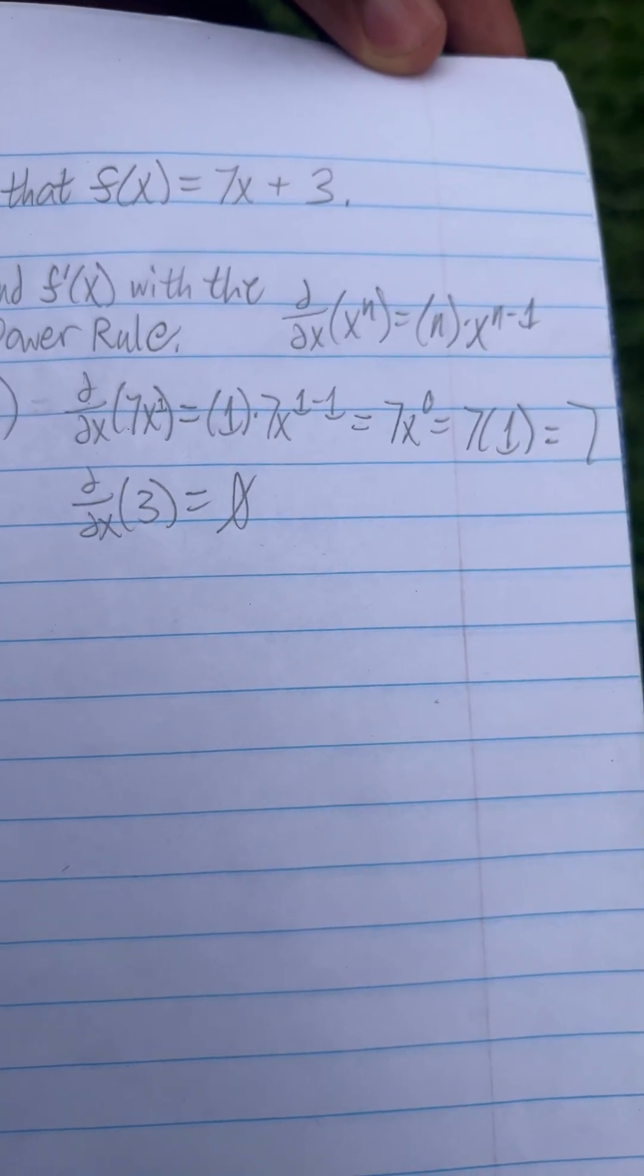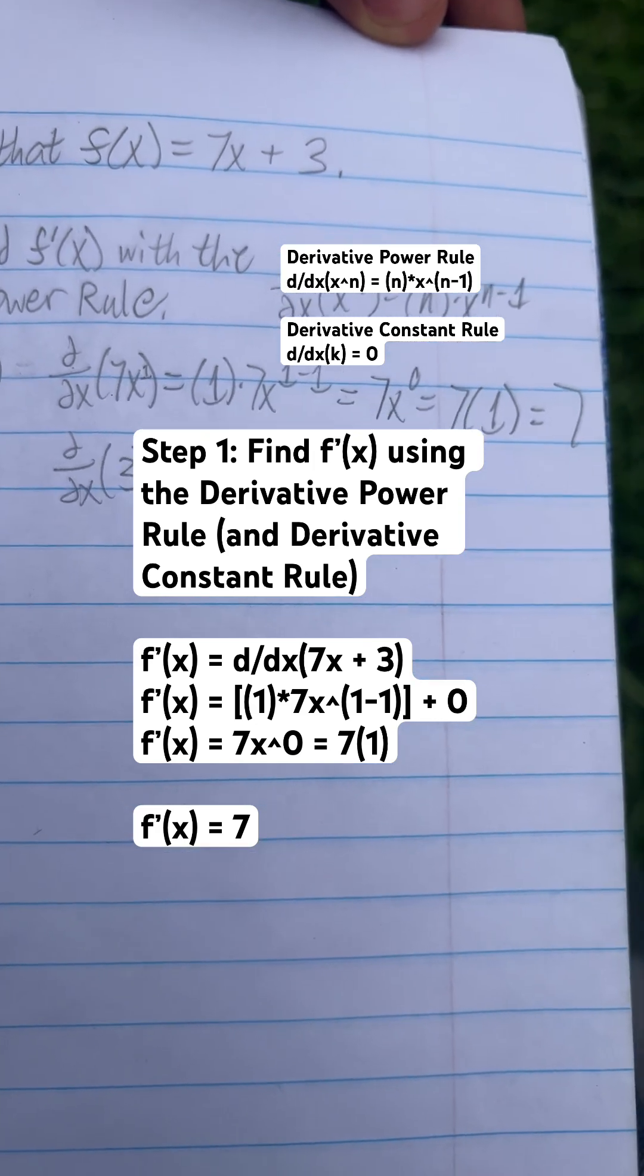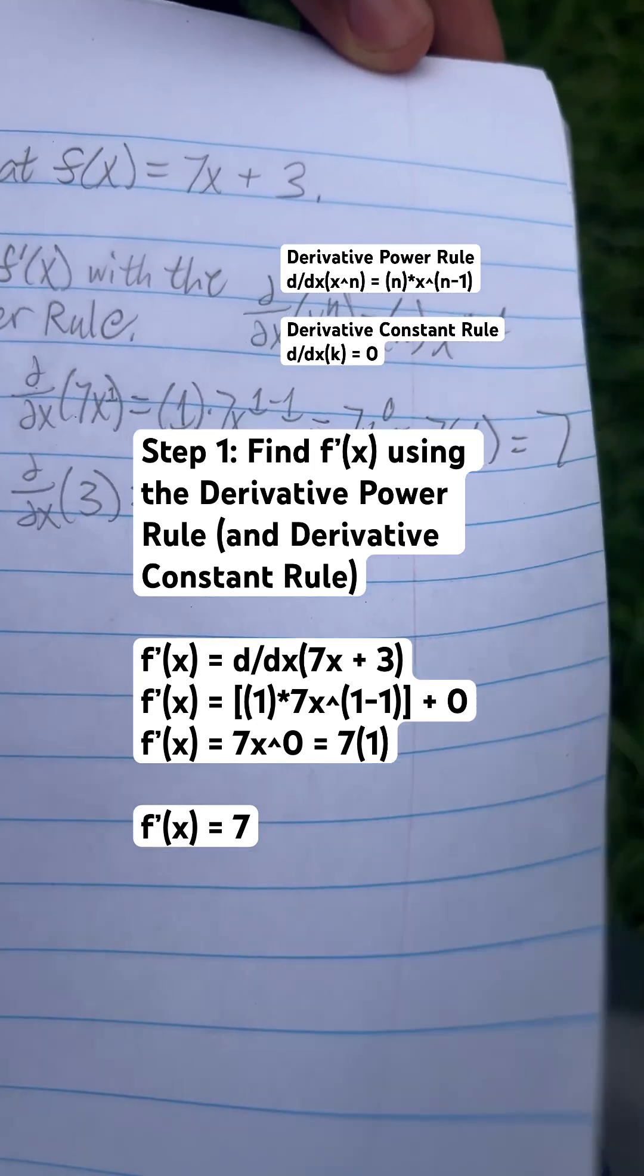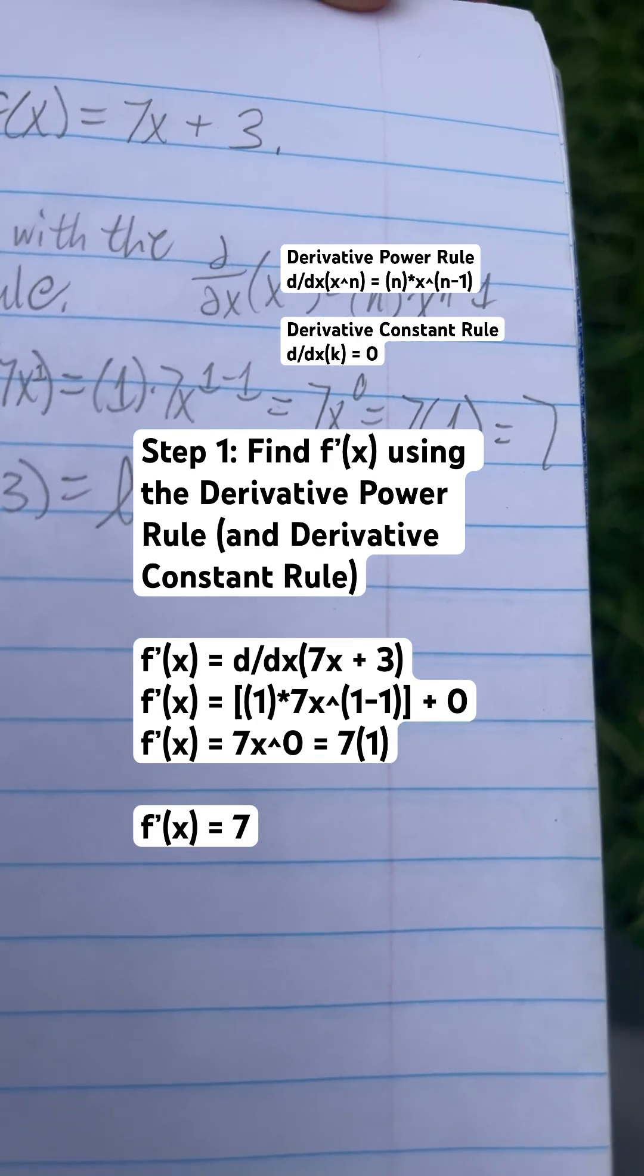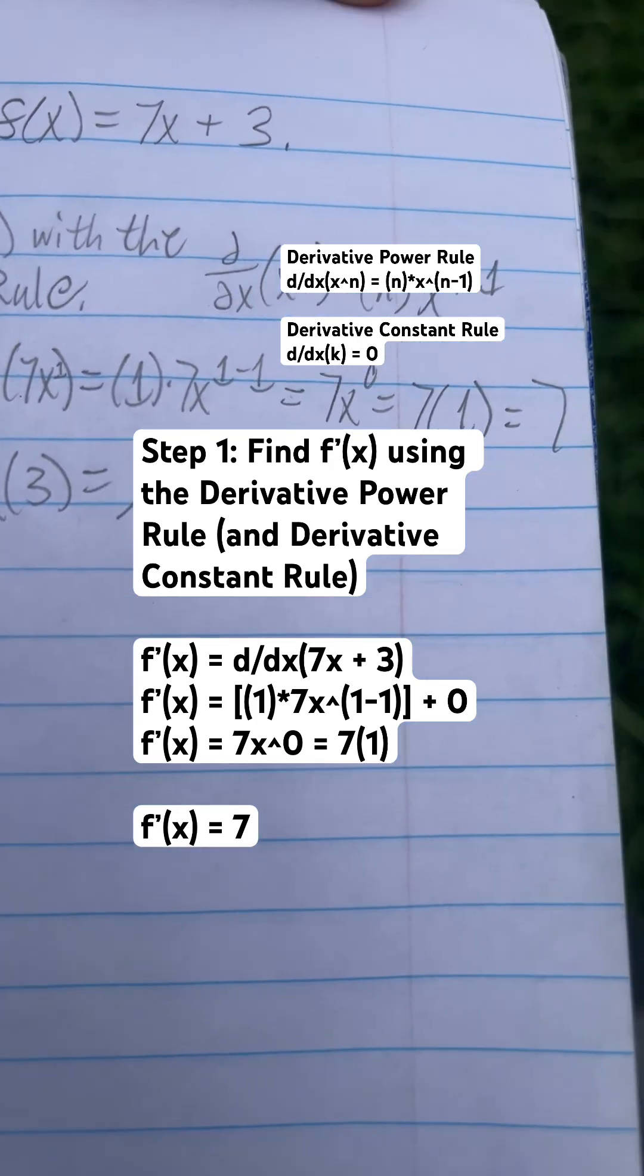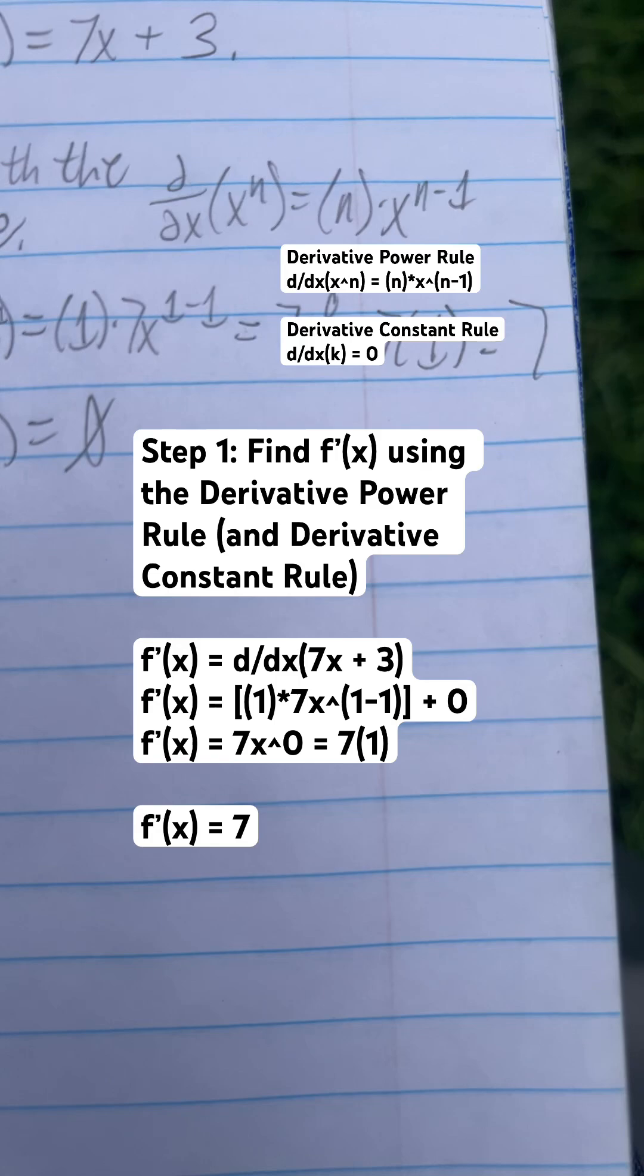And this is what that should look like for 7x. So since the exponent is 1, it's 1 times 7x. Subtract the 1 from the exponent 1 to get 7x to the power of 0. You already know x to the power of 0, that's just equal to 1, so you get 7 there.